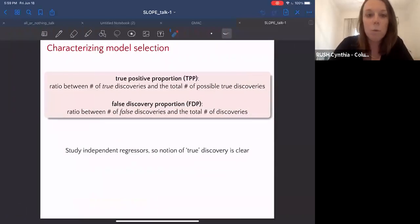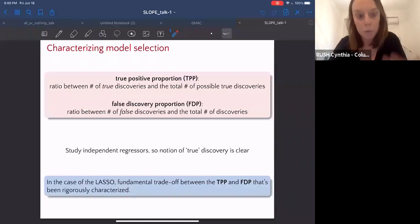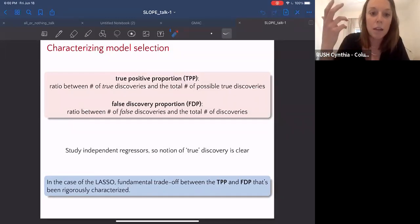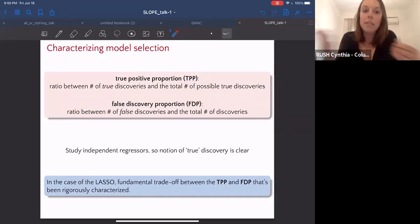In order to characterize model selection, I'm going to talk about the true positive proportion or the TPP and the false discovery proportion or the FDP. This gives some idea about the rate at which our procedure is finding true discoveries versus false discoveries. In particular, something that has been shown before is that in the case of the lasso, there's a fundamental trade-off between this true positive proportion TPP and false discovery proportion FDP that's rigorously characterized. This is equivalent to a type one type two error trade-off.